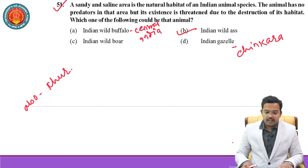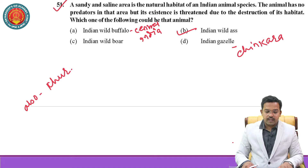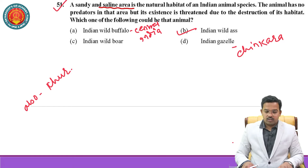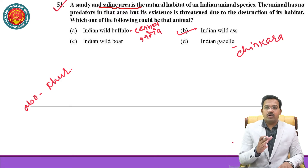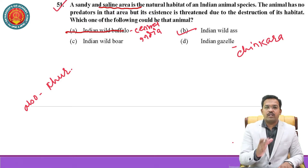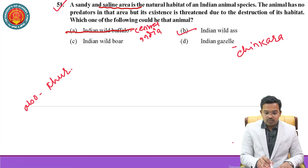The animal has no predator in that area, but its existence is threatened due to destruction of its habitat. Which one of the following could be that animal? The first option is Indian wild buffalo, which is found in central India. The saline area could be part of the Kutch region, Kathiawad region, or the regions of Rajasthan — so the first option would be considered.